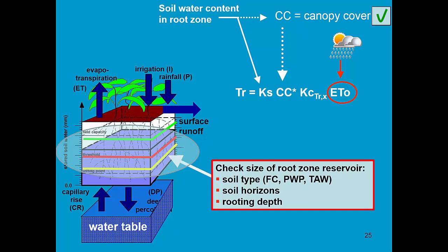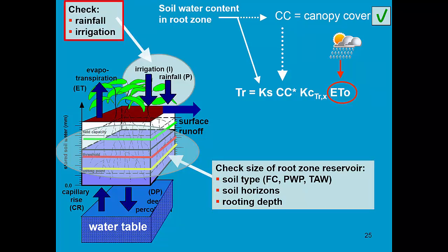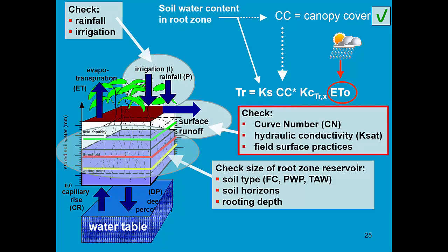Do we have the proper soil type that determines the storage capacity of our reservoir? Are there large differences in soil horizons? Then we have to enter soil physical characteristics of the different horizons. The rooting depth also determines the size of the reservoir. Subsequently, we have to check the data for rainfall and for irrigation. Runoff is simulated by means of a curve number — was that curve number properly selected? Also, the hydraulic conductivity and field surface practices affect the curve number.